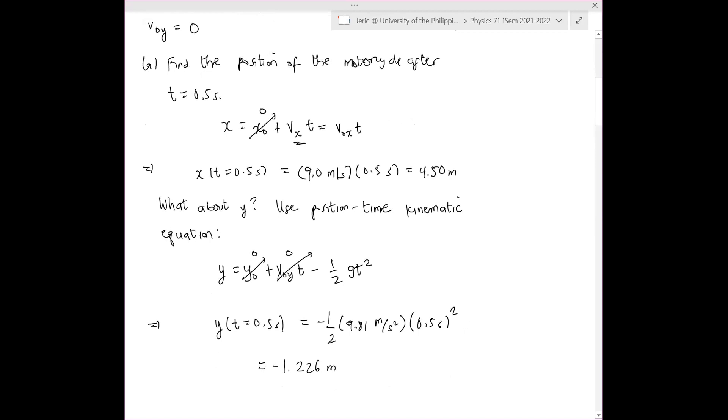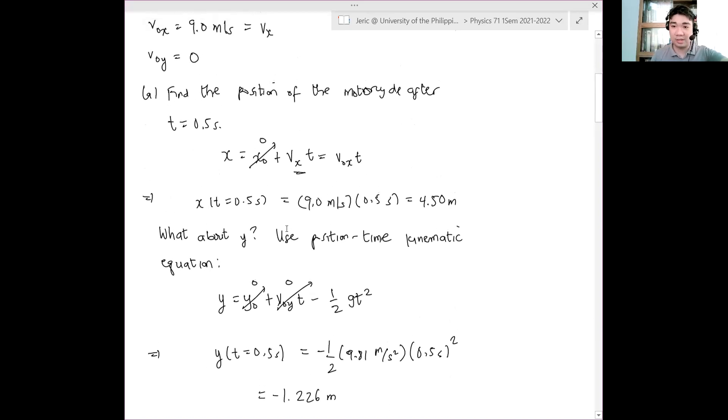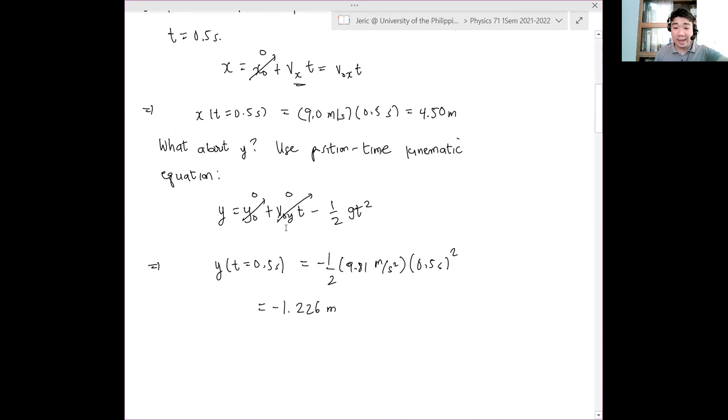So why is it negative? Because remember, your coordinate system, the origin is at the start of the ride. And hence, since it goes down, the value should be negative. Thus, the position now is simply...